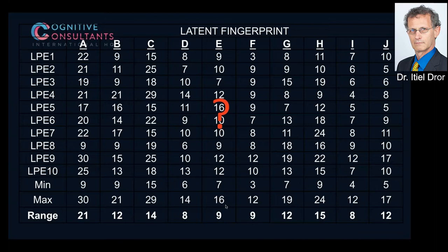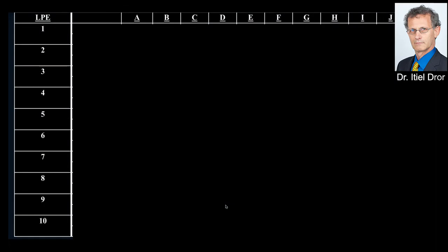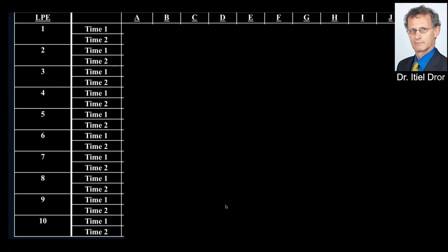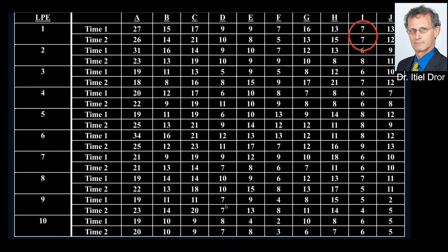FBI data — not just my research — from a paper on repeatability and reproducibility of latent print examiners shows that if you give the same fingerprint expert the same pair of prints twice, they reach a different decision 10% of the time. The same examiner reaches a different decision on the same fingerprint 10% of the time. Between examiners, the inconsistency is even larger. The evidence does go into the brain, but the top-down cognitive mechanisms are critically important in how it gets processed.